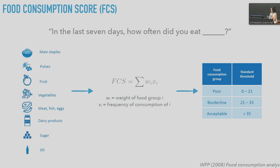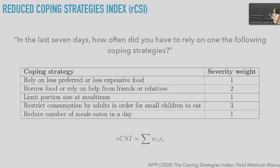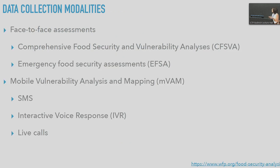Another important measure is the Reduced Coping Strategy Index (rCSI), which captures how people cope with insufficient food access. Households are asked how often in the last seven days they had to rely on strategies like borrowing food from family or friends, limiting portion sizes, or restricting adult consumption so children could eat. Each strategy has a severity level, and a weighted frequency sum produces a score indicating how food insecure each household is in terms of coping.